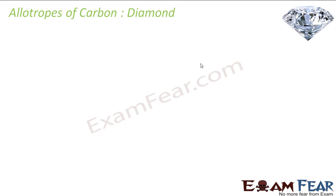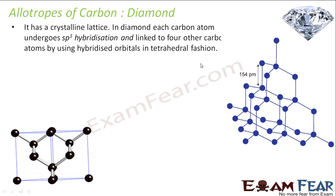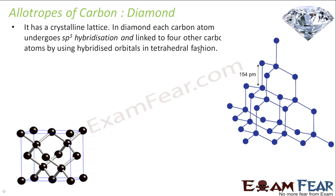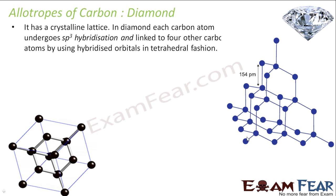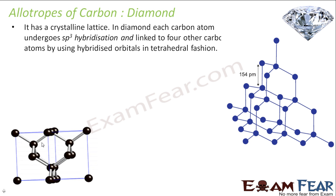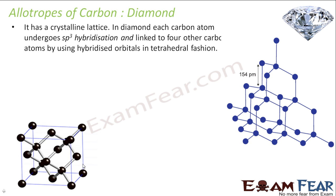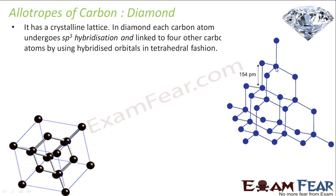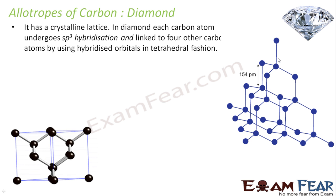Let us talk about the second allotrope — diamond. Diamond is a very shiny and very hard non-metal. It has a crystalline lattice structure. Each carbon in diamond undergoes sp3 hybridization — one carbon is linked to 1, 2, 3, 4 other carbon atoms. It is all sp3 hybridization, all through sigma bonds. There is no pi bond, because all 4 electrons of carbon are used in bonding.